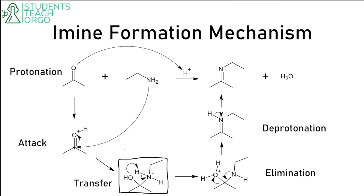Then we do a transfer: the hydroxyl group grabs the hydrogen from the amine, and we kick those electrons back to the nitrogen, forming water. The elimination step is almost always to form water or another stable leaving group, and we kick out the stable leaving group using the lone pair of the amine. Finally, we deprotonate to give zero formal charge and get our imine.